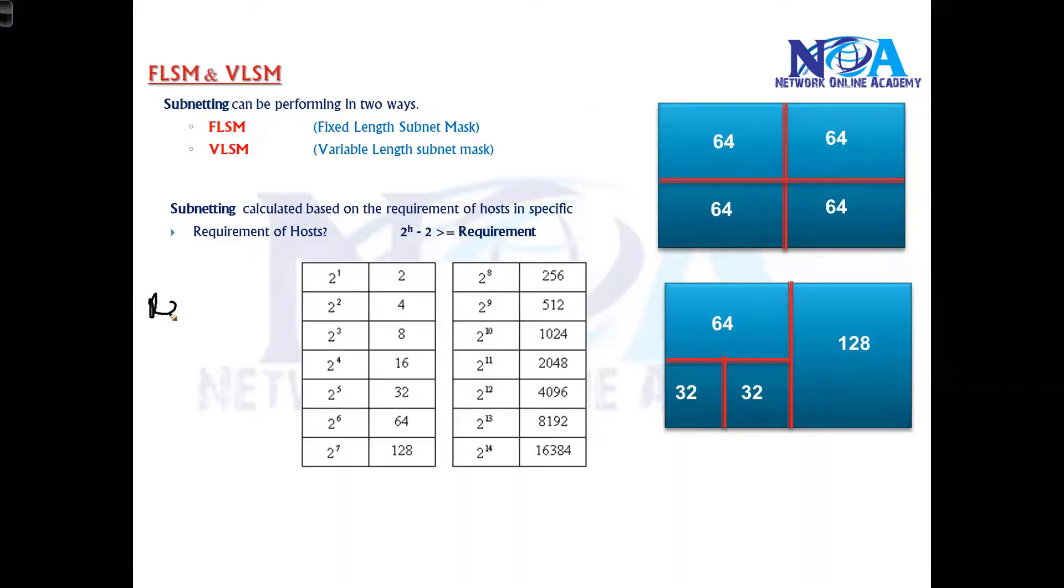Based on this example, let's say my requirement is 30 hosts. So we have to go with 2^h - 2 ≥ 30, which means the nearest power of 2 value which satisfies my condition. Similarly, if my requirement is 60 hosts, I have to go with 2 to the power of 6.